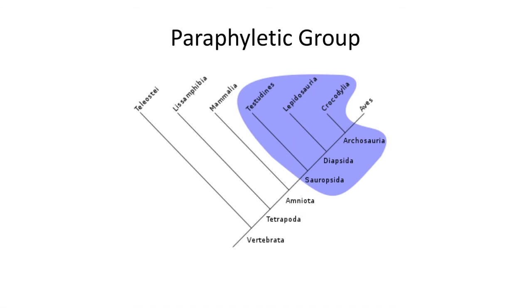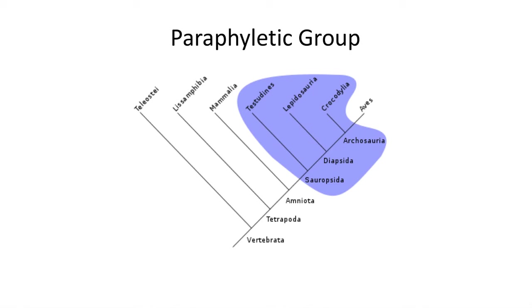Paraphyletic groups consist of the descendants of the last common ancestor of the group's members, minus a small number of monophyletic groups of descendants — typically just one branch. Note that in paraphyletic groups you would need to use two cuts to prune the tree. Paraphyletic groups are frequently used in paleontology. For example, dinosaurs are considered a paraphyletic group since they do not include their descendants, birds. Often paleontologists refer to non-avian dinosaurs to describe this paraphyletic group.